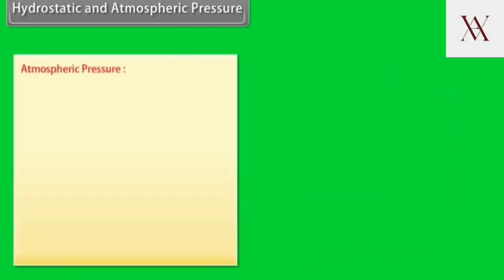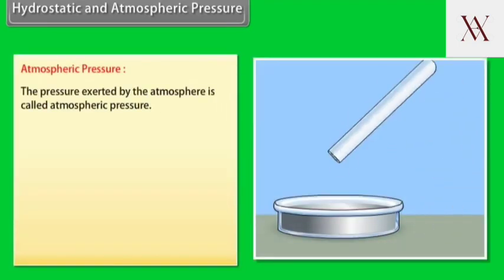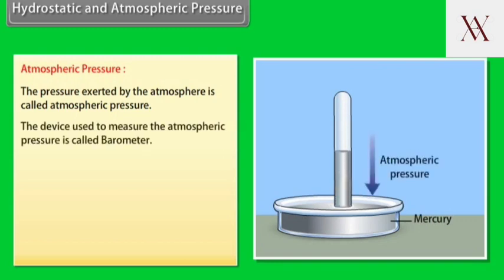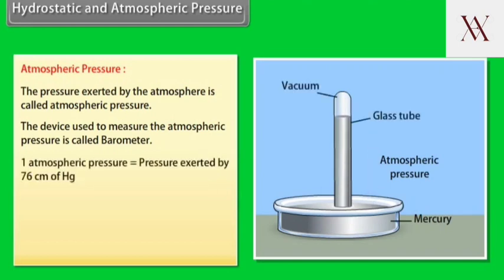Atmospheric pressure. The pressure exerted by the atmosphere is called atmospheric pressure. The device used to measure atmospheric pressure is called barometer. One atmospheric pressure is equal to pressure exerted by 76 cm of mercury.